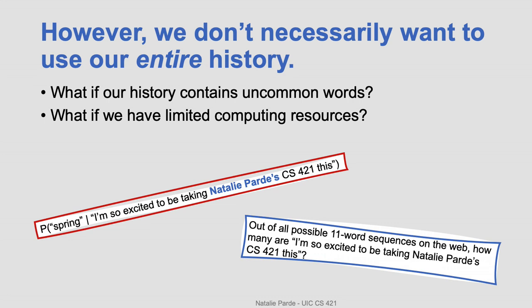This method isn't fail-safe by any means. You can easily imagine scenarios in which it might backfire. For example, our history might contain uncommon words like Natalie Pariti, or we might have limited computing resources, making it difficult to estimate n-gram probabilities this way when we're using large corpora.